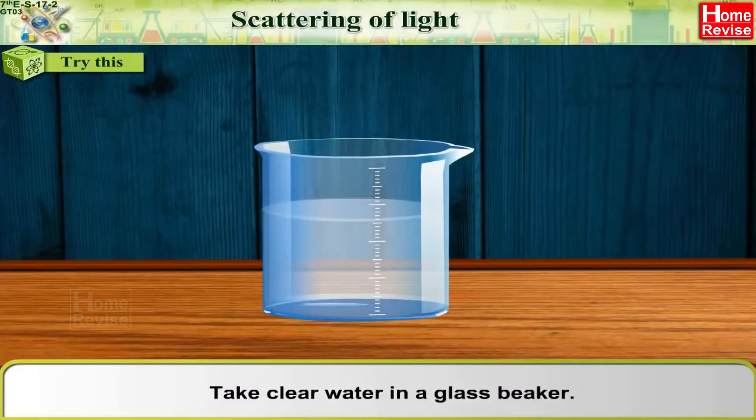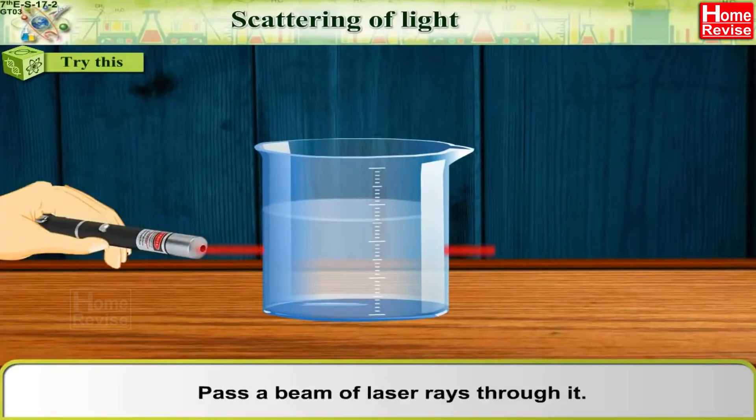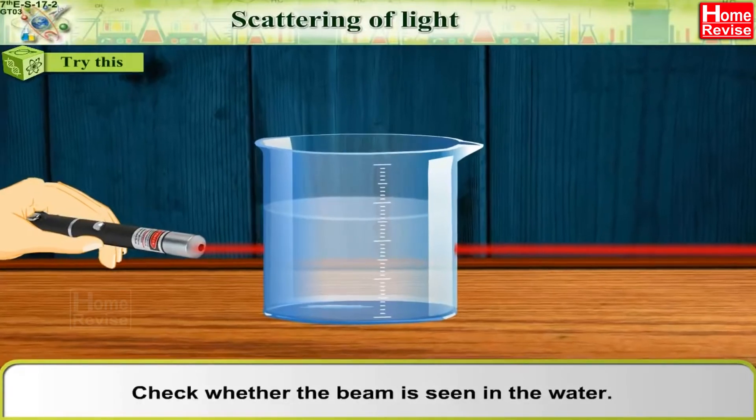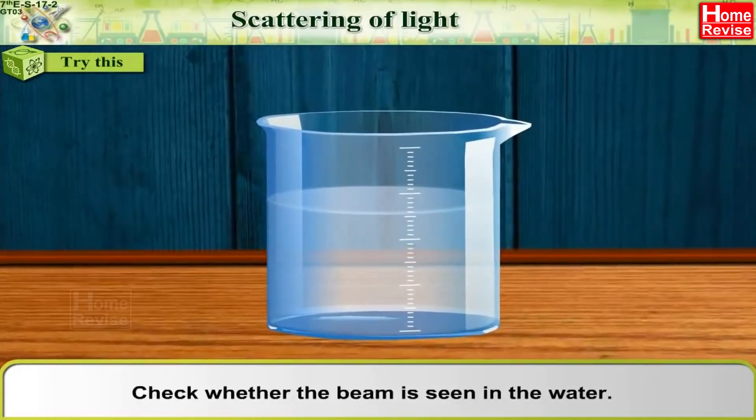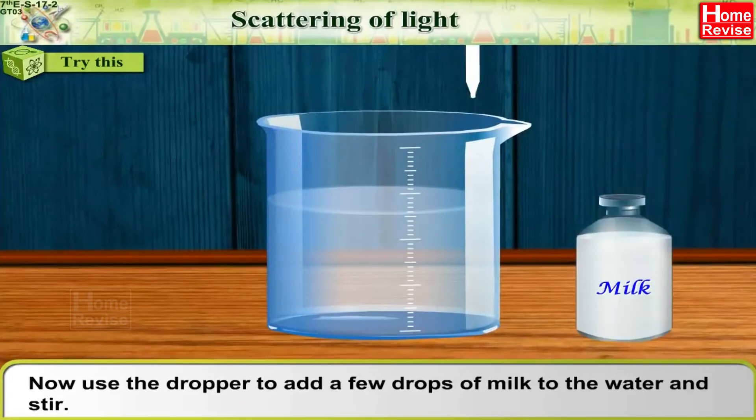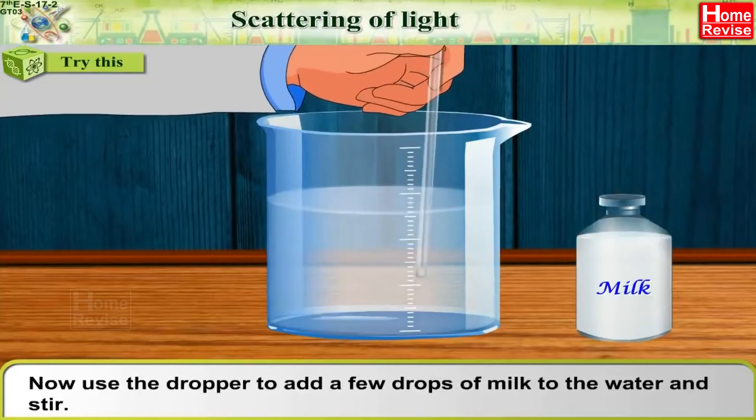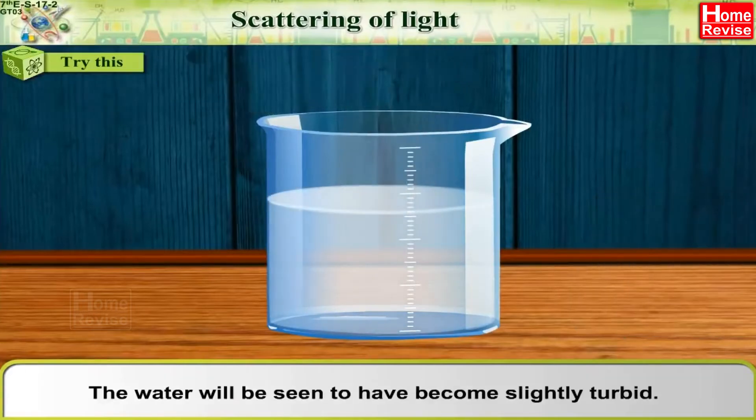Pass a beam of laser rays through it. Check whether the beam is seen in the water. Now use the dropper to add a few drops of milk to the water and stir. The water will be seen to have become slightly turbid.